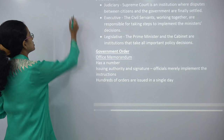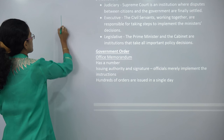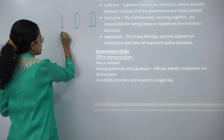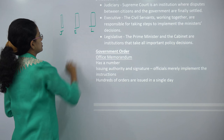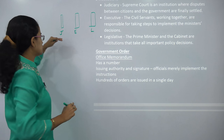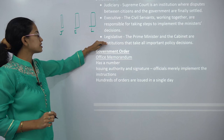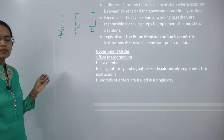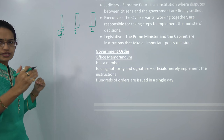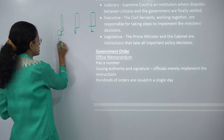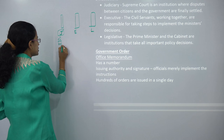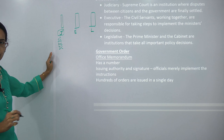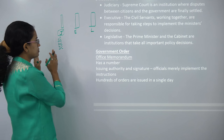For the institutions in the government, we have three pillars, known as J, E, and L — that is Judiciary, Executive, and Legislature. Judiciary is very simple to understand. It includes all the procedures that make up the court or the judgment section. At the national level you have the Supreme Court, at the state level the High Court, and at the local level the District Court.